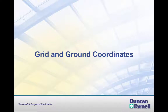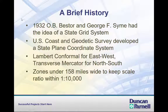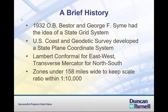Grid and Ground Coordinates in North Carolina. Back in 1932, a couple of state highway engineers in North Carolina, Obi Bester and George Syme, had the idea to come up with a state grid system for survey calculations or for survey coordinates. It's a lot easier to do the math for surveying on a flat surface than on the curved surface of the earth. They took this idea to the U.S. Coast and Geodetic Survey, which is now the National Geodetic Survey, and those guys developed what is now the state plane coordinate system.